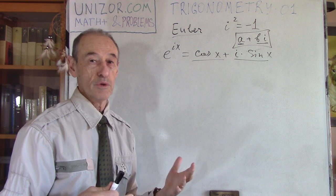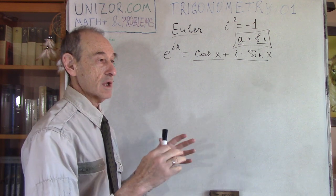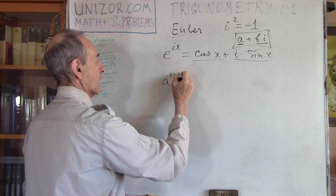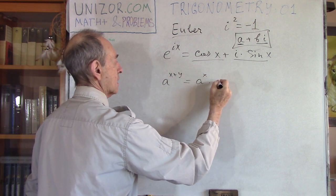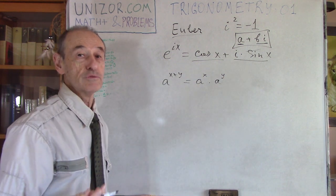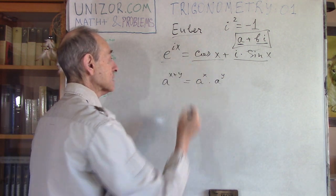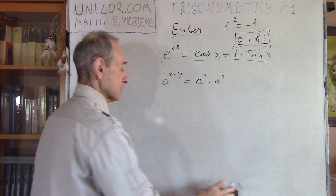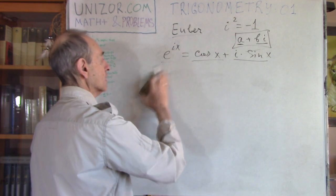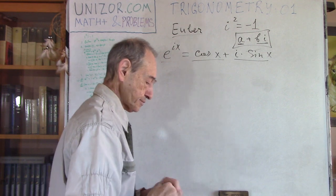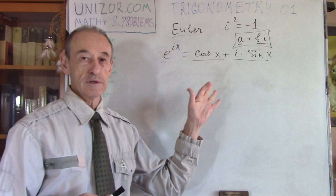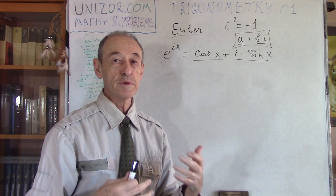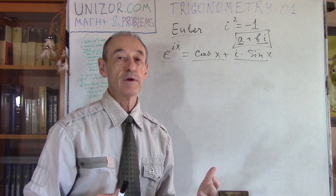You can consider this as a definition, but any definition should be reasonable. This particular definition is very reasonable, because all the formulas we know about exponential functions still hold. For example, a to the power x plus y equals a to the power x times a to the power y — we know that from real number theory, and it stands even if x and y are complex numbers when you use this definition. So we have a lot of logical foundation behind this formula, and it really opens up many different interesting things.